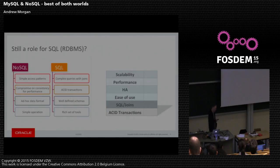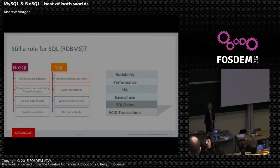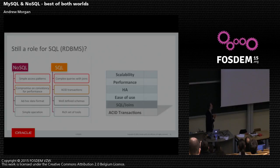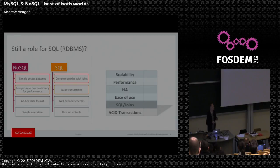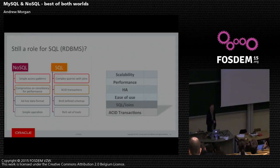On the left-hand side here we can see what are some of the attributes that people like about NoSQL data stores. Simple access patterns — applications that are very often just storing data and retrieving it, nothing like joins or foreign keys. People using NoSQL stores usually accept that they have to compromise on data consistency to get the best possible performance. You'll hear terms like eventual consistency — when you write the data, someone else reads it and may see something different. Ad hoc data format, you don't have to define a schema ahead of time. And they tend to be very simple to operate — getting up and running is very quick, without having to set millions of configuration parameters.